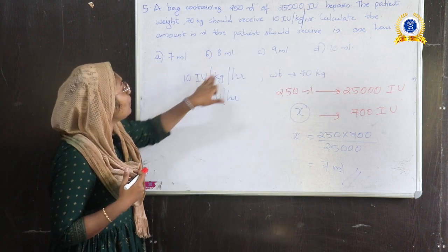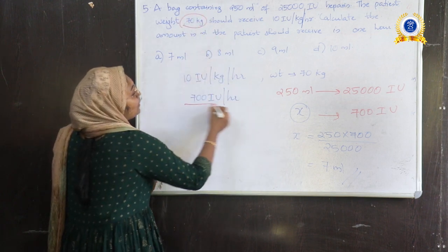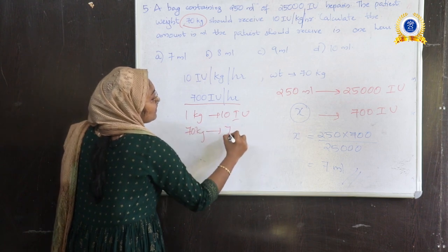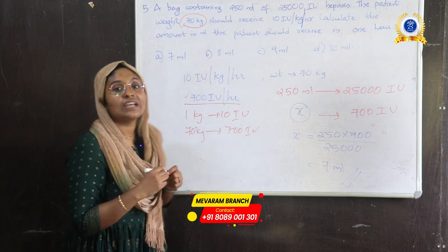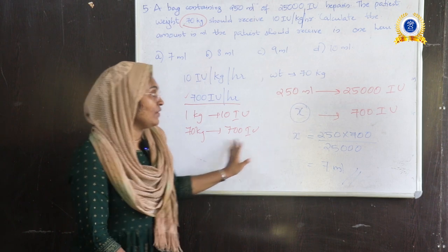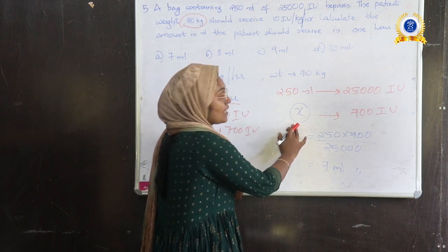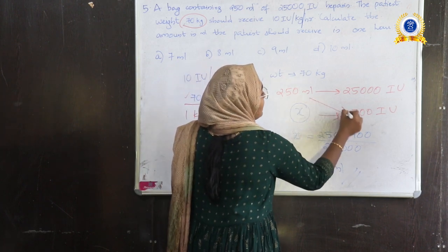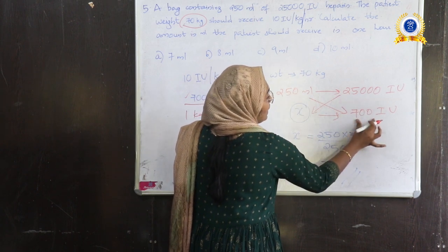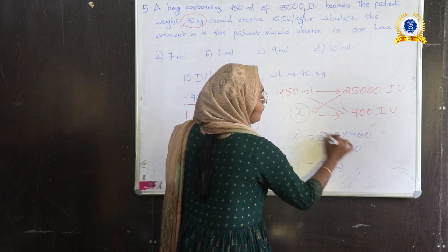At 10 IU per kg per hour, for a 70 kg patient: 10 × 70 = 700 IU per hour. Using cross multiplication with the bag concentration: X × 25,000 = 250 × 700, so X = (250 × 700) ÷ 25,000 = 7 ml. The answer is 7 ml.